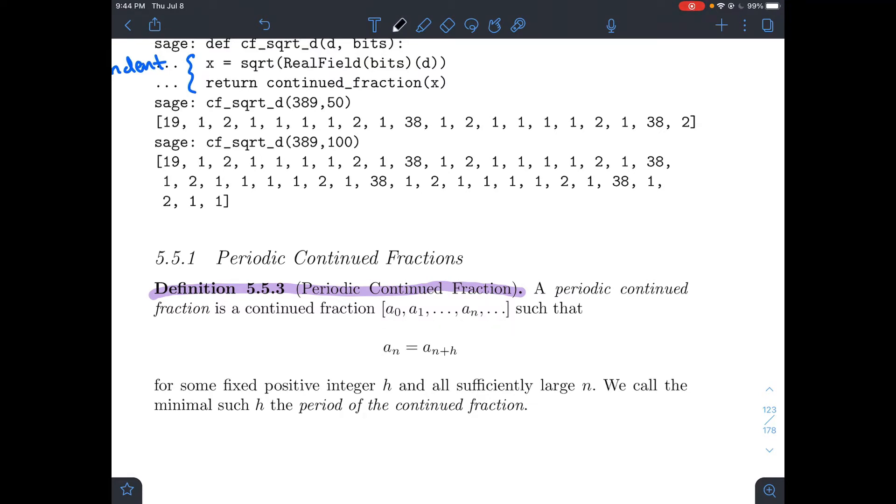But what should happen? At some point, an should be the same thing as an plus h for some fixed positive integer h and all sufficiently large n. By this all sufficiently large n language, that's saying eventually there should be some repetition. That's what we're going to use the word periodic to stand for - there should be some pattern that repeats.